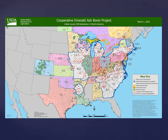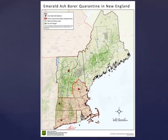Each red dot on this map represents a county that has found the emerald ash borer, and all the blue lines represent the legal quarantine area around the infestation. The insect alone will travel one to two miles, but because of human-facilitated movement of wood products such as firewood, it has spread to places like Colorado that it may not have reached on its own. The emerald ash borer was confirmed in Northern Orange County, Vermont in February 2018 — the first EAB infestation discovered in Vermont. It has also been detected in Caledonia and Washington counties.